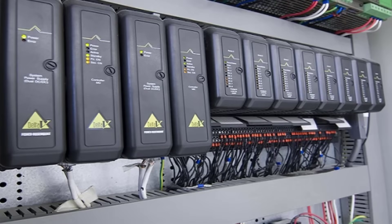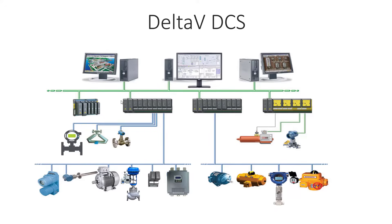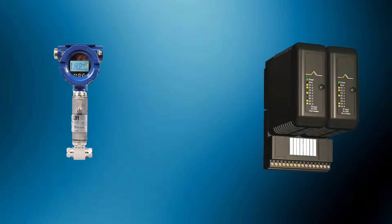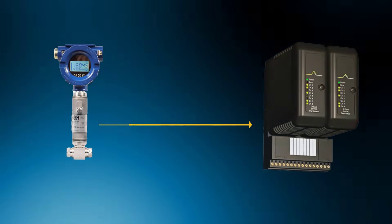Inside the control cabinet of Delta V DCS you will find IO cards — digital and analog IO cards. For digital input signals you use a digital input card, and for digital output signals you use a digital output card. For analog inputs like temperature, pressure, and flow values coming from field transmitters, these go into an analog input card. For analog outputs connecting to field devices, you use an analog output card.